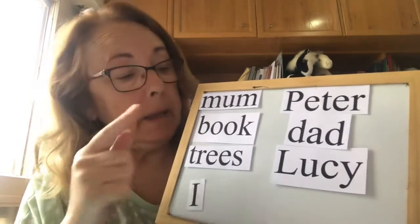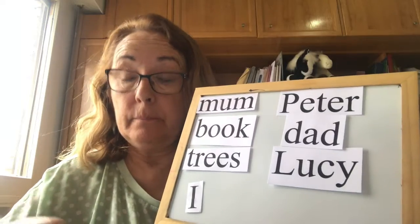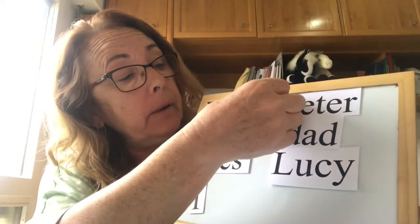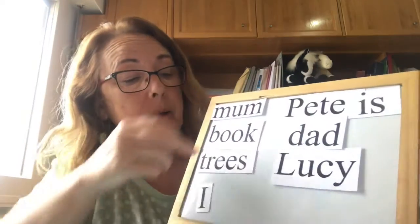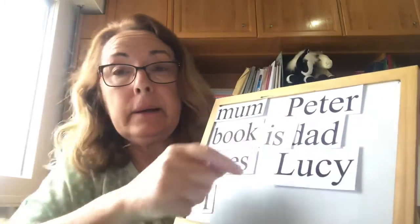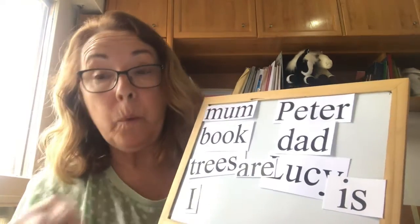Okay, now you have to tell me if this goes with 'is', 'are', or 'am'. Mum — mum is. Okay, mum goes with 'is'. Mum is. Peter with is. Book with is. Dad with is. Trees with are. Lucy with is. I with am.